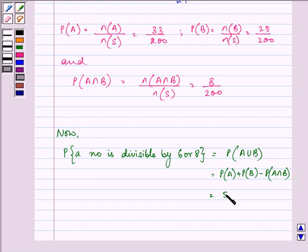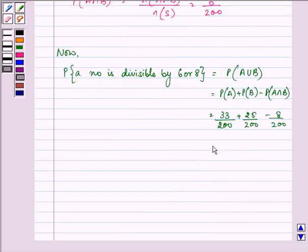So it is 33 upon 200 plus 25 upon 200 minus 8 upon 200. That comes out to be 50 upon 200, that on simplification gives us 1 by 4. That is the answer to this question.